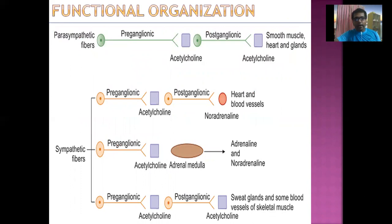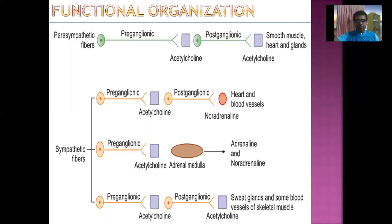Now, the functional organization of the ANS. According to the chemical they release, autonomic fibers are of two types: cholinergic fibers, which release acetylcholine, and adrenergic fibers, which release adrenaline and noradrenaline. In the Parasympathetic system, both the preganglionic and postganglionic neurons release acetylcholine — so all pre- and postganglionic neurons of the parasympathetic system are cholinergic. All preganglionic neurons of the sympathetic nervous system are also cholinergic.